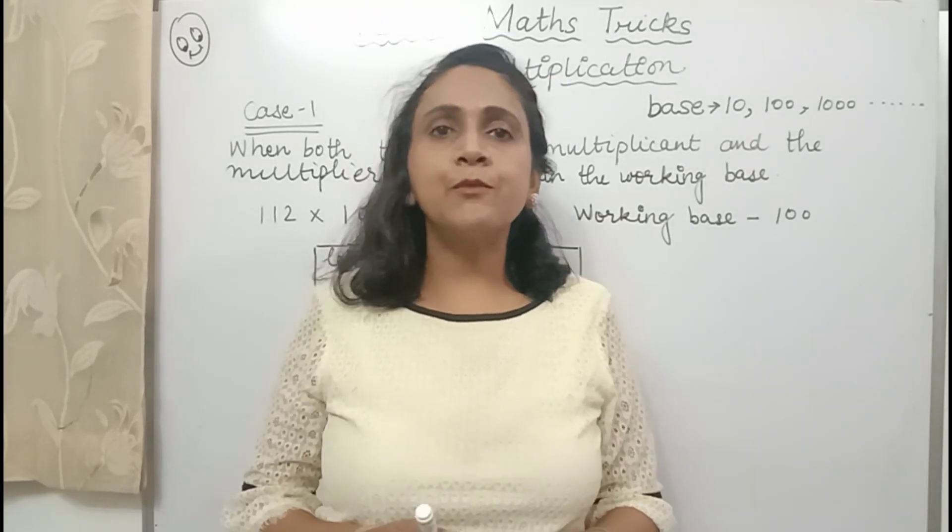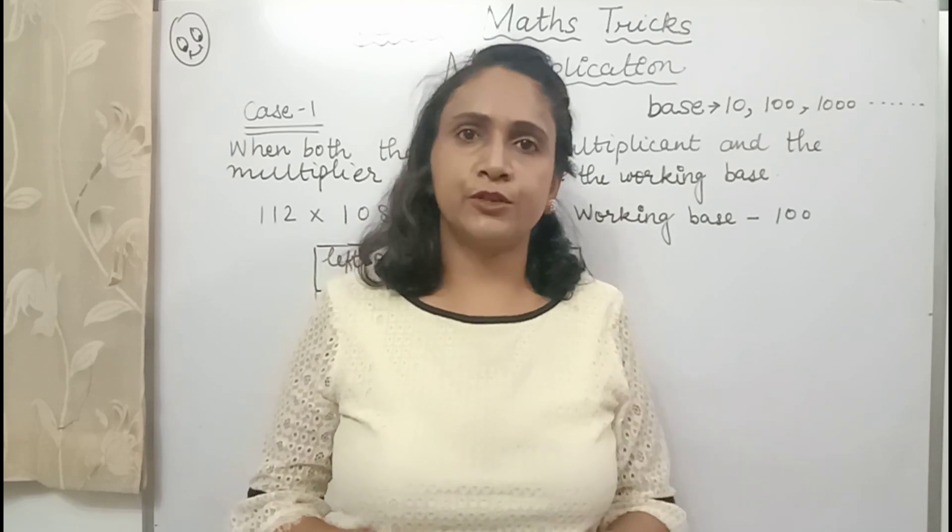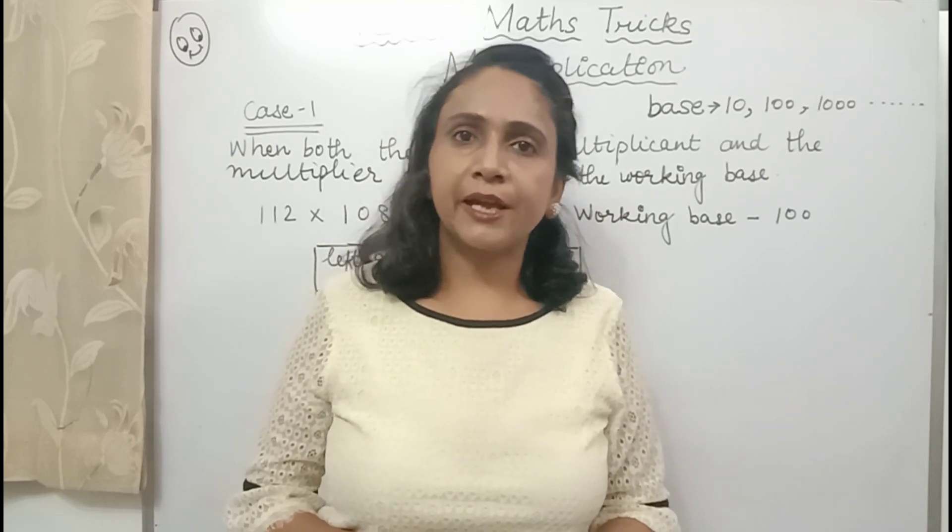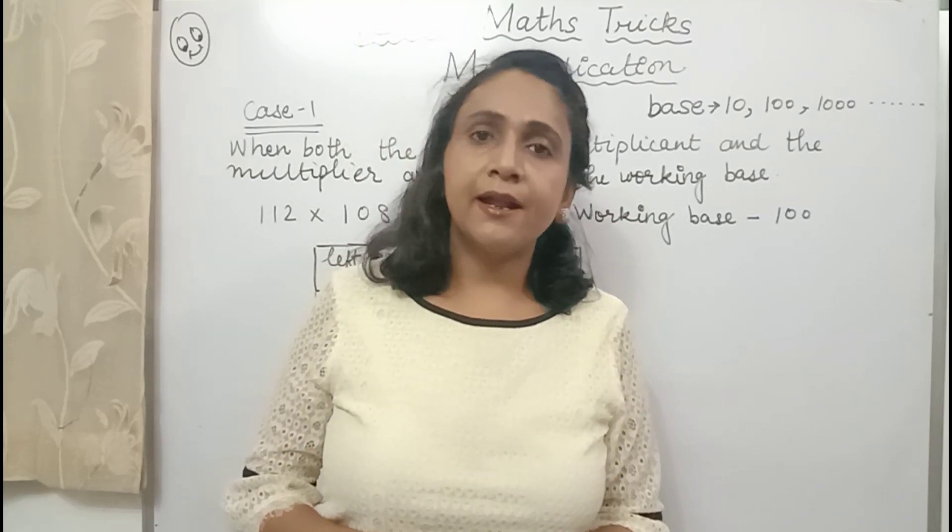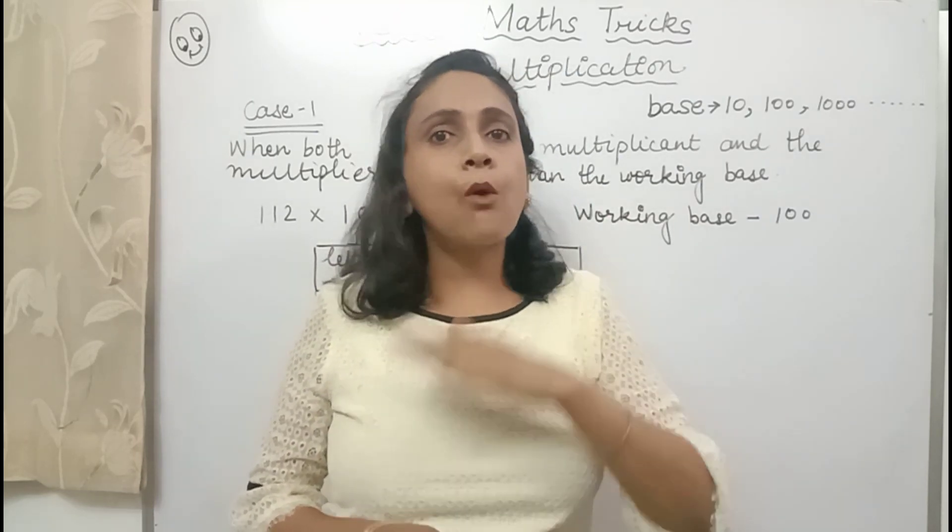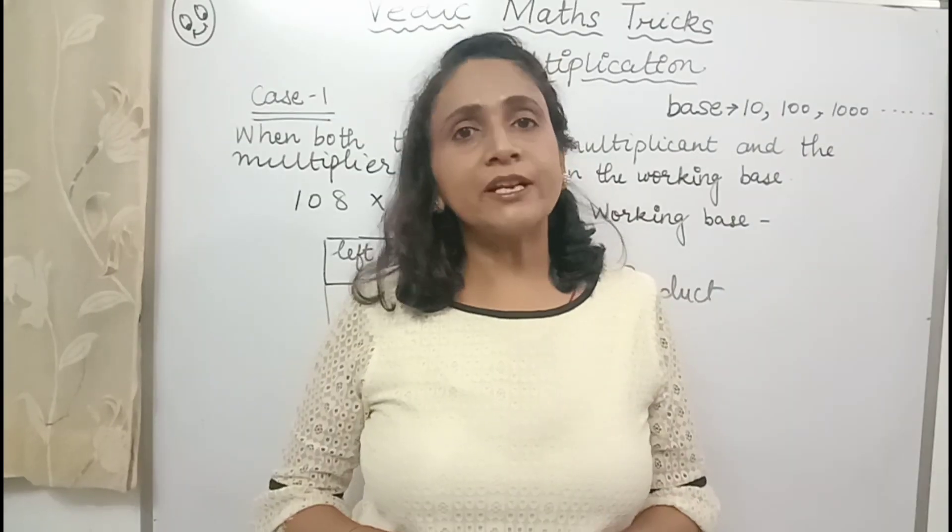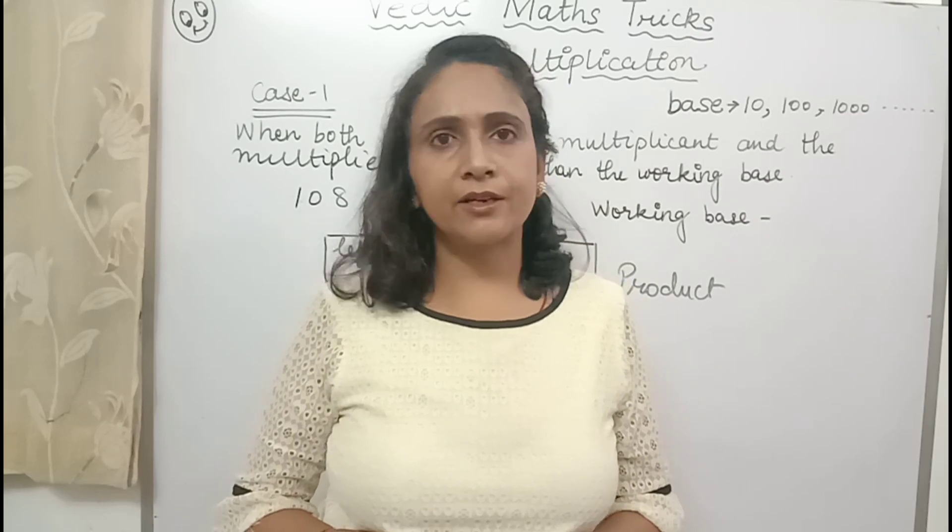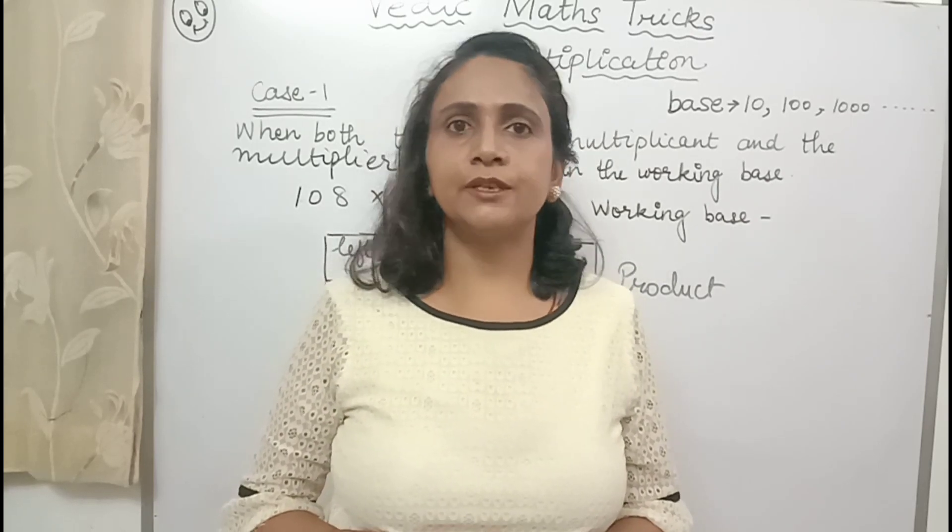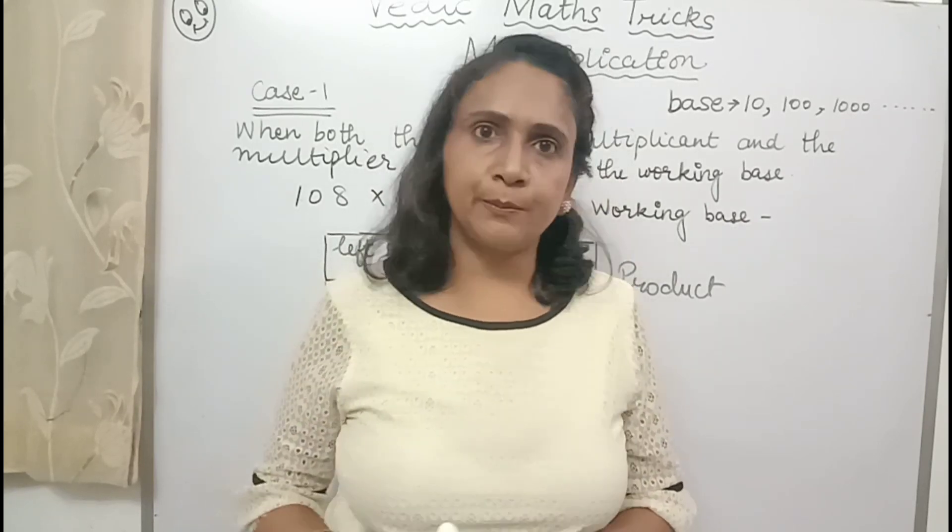I am going to show you these tricks in different videos. Today I am going to take the first case where multiplicand and multiplier are both above, more than the working base. Now what is working base? Working base means 1 and zeros like 10, 100, 1000, 10,000, lakh. So these are our working base.